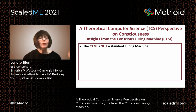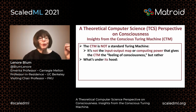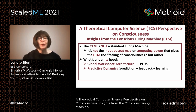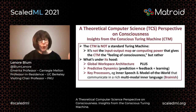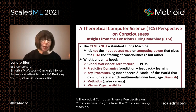The second point is that the CTM is not a standard Turing machine. It's not the input-output map or computing power that gives the CTM the feeling of consciousness, but rather what's under its hood — which is to start with the global workspace architecture, plus something we call predictive dynamics: cycles of prediction, feedback, and learning happening throughout the CTM. And then several key processes, for example, inner speech processor and model of the world processor, that communicate in a rich multimodal inner language which we call brainish, plus motivation and some minimal cognitive ability.